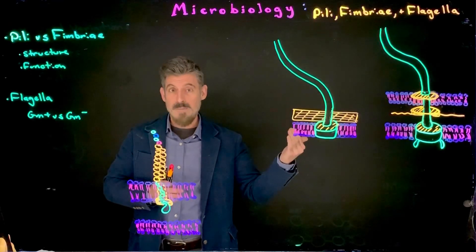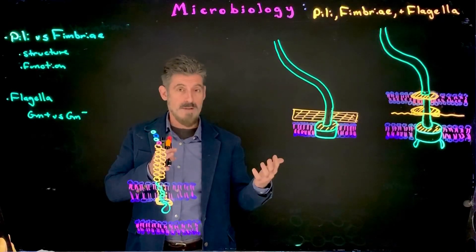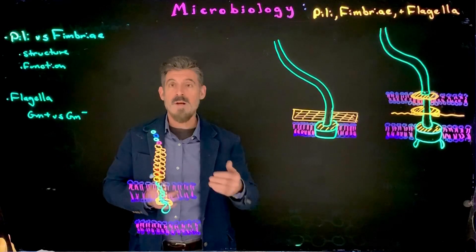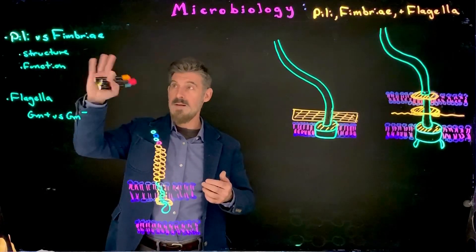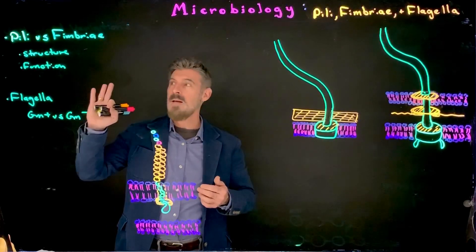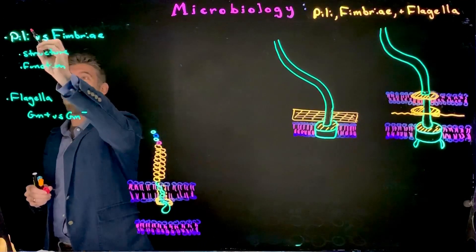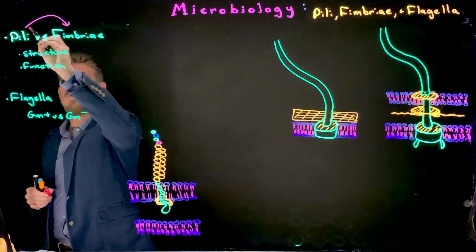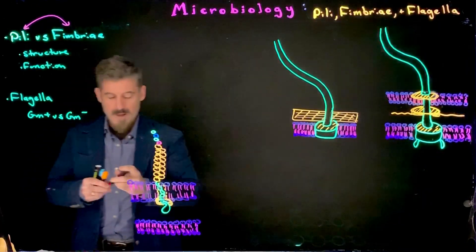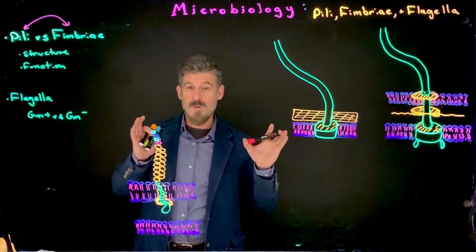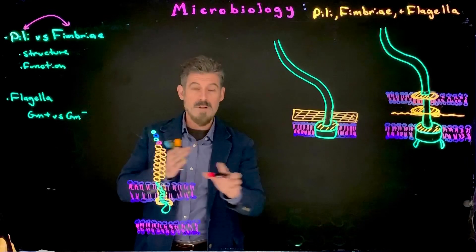Also found outside bacterial cells, another structure that we tend to see that's associated with these are pili, fimbriae, and flagella. And now, in general, what we're going to have here is that pili and fimbriae are two terms that are sometimes used for specific things and sometimes used interchangeably.